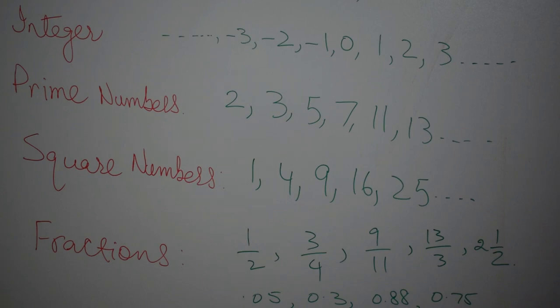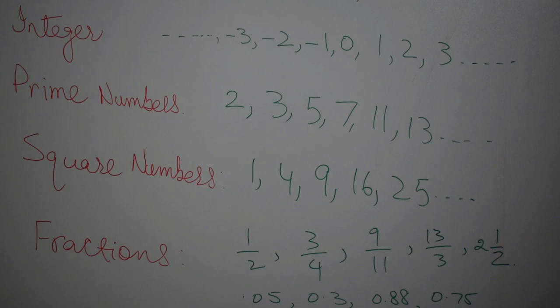Rest of all are the odd numbers. Then comes the square numbers. Square numbers are numbers which are formed by the product of itself. That means if I multiply one with one I get one. If I multiply two with two I get four. If I multiply three with three I get nine. If I multiply four with four I get 16 and so on, 25 and then 36 and so on.